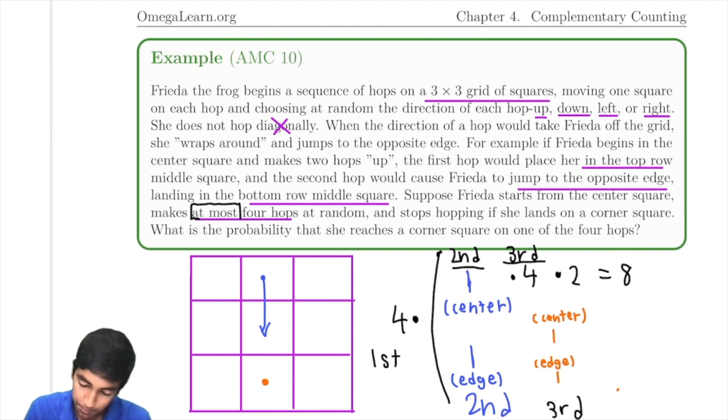So now for the final move in this case. If we were already on another edge, how many choices do we have? We have two choices, because no corners are allowed. Go back to the center, or wrap around. So from here, we have two choices if we're at the edge. What if we're at the center after the third move? Now, in this case, we have four choices for the final move. All four work. So that's times four.